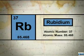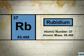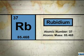Element number 37 on the periodic table is rubidium. The atomic symbol for rubidium is Rb.